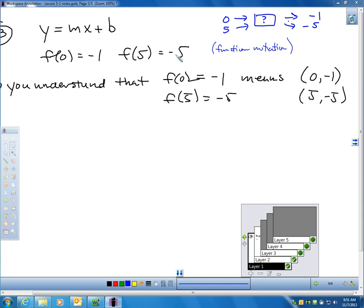Do you understand that if I input 0 for x and y is negative 1, that this really means I have the point 0 for x, negative 1 for y? And, f of 5 equals negative 5 means if I input 5 for x, if I input 5 into the box, the box outputs negative 5,